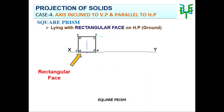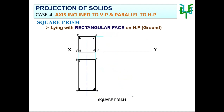When a prism is lying with its rectangular face on the ground, that particular rectangular face should be touching the XY line, and thereby it is understood that the axis is parallel to HP. The elevation of the first stage is to be drawn by having one side of the polygon on the XY line. Project the corners and draw the plan. To draw the second stage plan, we should see the inclination of the object with VP.